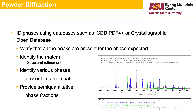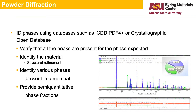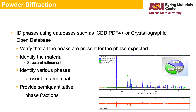Once the phases are identified, one can also determine the phase fraction. For example, we have 40.4% anatase, 41% corundum, and 18% nickel oxide in this sample.